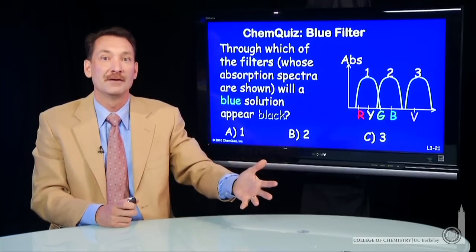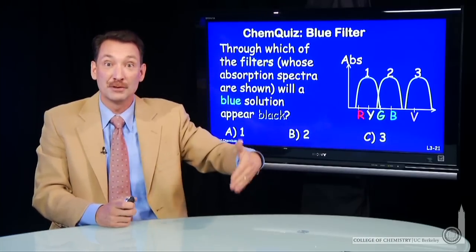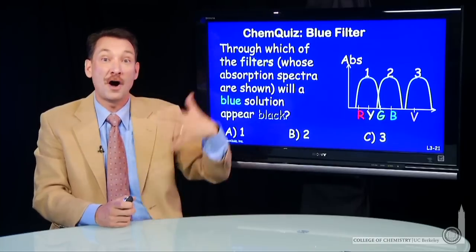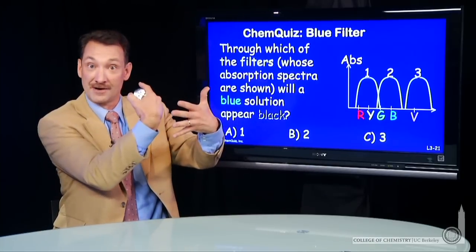How do we make it appear black? Well, we have to remove that remaining blue wavelength, essentially removing all the wavelengths from that object so none hit our eye, and we have a black object.